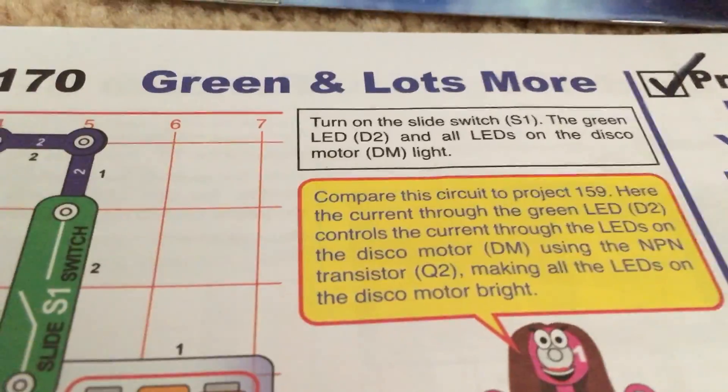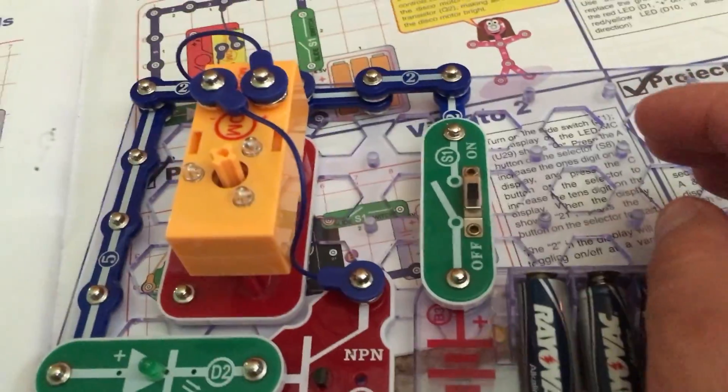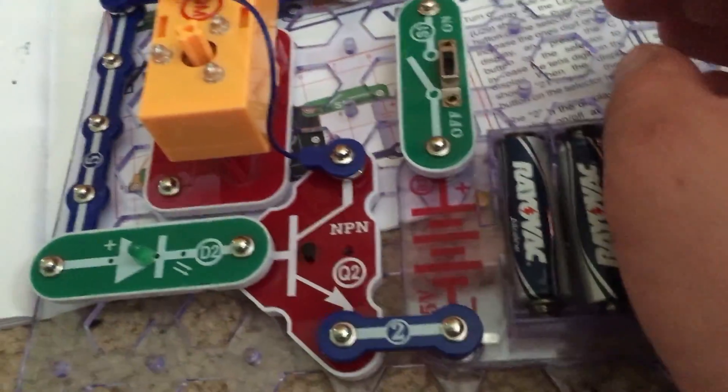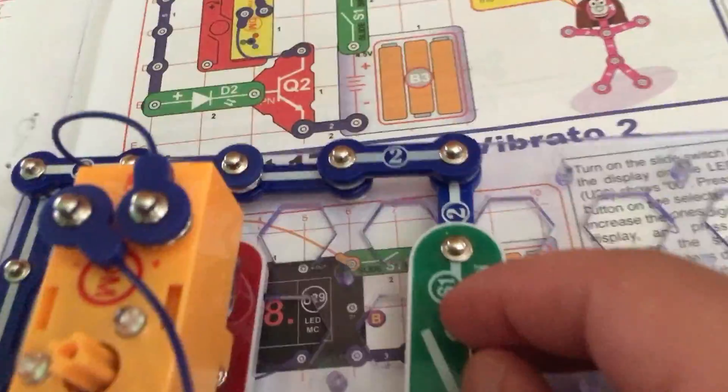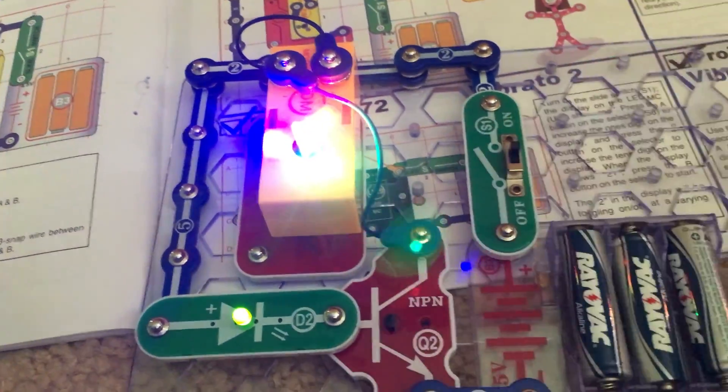Project 170 is green and lots more. We will use the circuit right here which includes the disco motor, the NPN transistor, and the green LED. We're going to turn on the slide switch and let's see what happens.